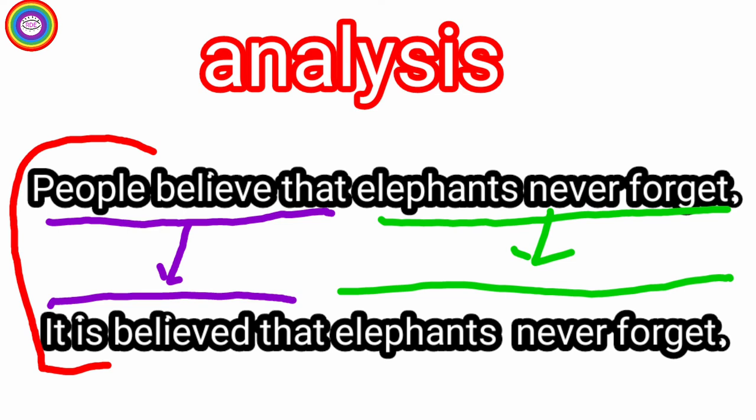Here we can make the analysis like this way. People believe that elephants never forget. Here, people believe that. In the that clause, we can change like this way: it's believed that. And main clause, elephants never forget, we don't change. It remains the same. Only the that clause, people believe that, can be changed like this way: it's believed that.